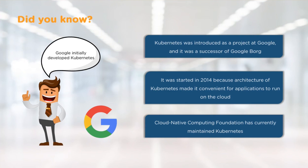A little background and trivia around Kubernetes: it was originally a successor to a Google project called Google Borg, which does exactly what Kubernetes does today. Kubernetes was rewritten from the ground up and released as an open source project in 2014 so people outside of Google could take advantage of its containerization management tools. Today it is managed by the Cloud Native Computing Foundation, and companies like Microsoft Azure, AWS, and Google Cloud all leverage Kubernetes — it has become the de facto tool for managing large groups of containers.